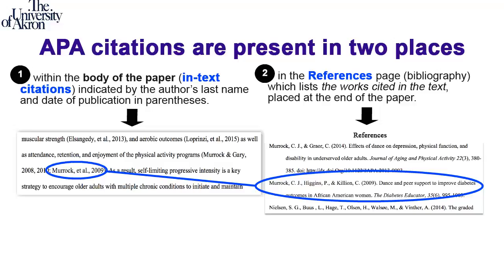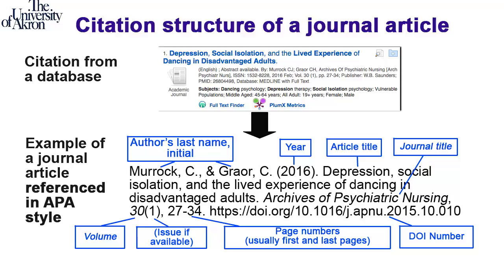The general citation of the journal article consists of the author's last name and initials, followed by the publication year, the article title, the journal title, the volume, and if available, the issue number. After the page numbers, the DOI number is included for online publications, when available.